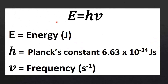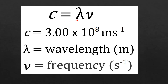We'll use two equations. The first is E equals h times nu, where E is energy in joules, h is Planck's constant (6.63 × 10⁻³⁴ J·s), and nu is frequency in s⁻¹. The second equation is c equals lambda times nu, where c is the speed of light (3.00 × 10⁸ m·s⁻¹), lambda is wavelength in meters, and nu is frequency in s⁻¹.